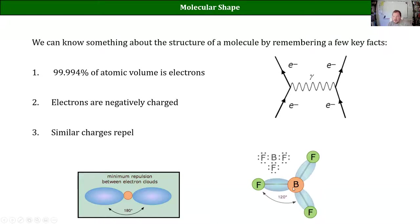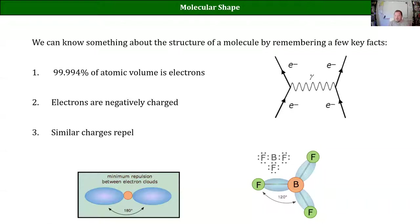If we have three things around a central atom — three electron groups or electron domains — the furthest apart they can get is 120 degrees. If you have 360 degrees to work from and you split it among three different lines, the furthest apart those lines can be is 120 degrees. Think of trying to cut a pie into thirds — each slice will be about 120 degrees because that's the furthest apart you can get the cuts while keeping everything the same size.